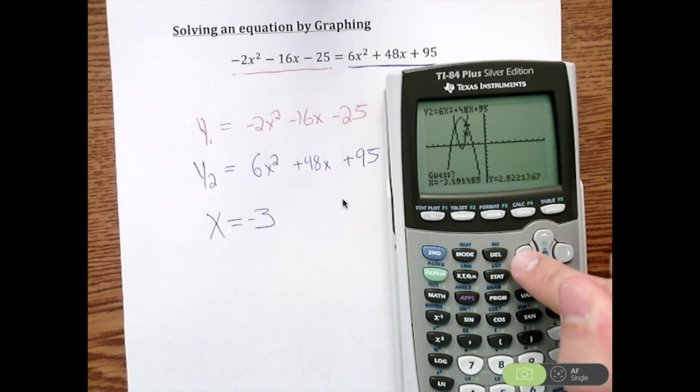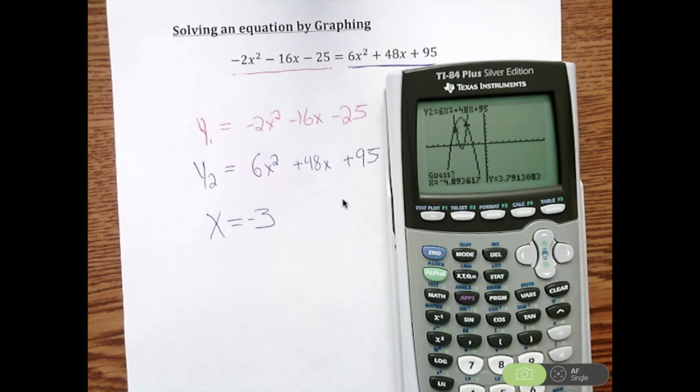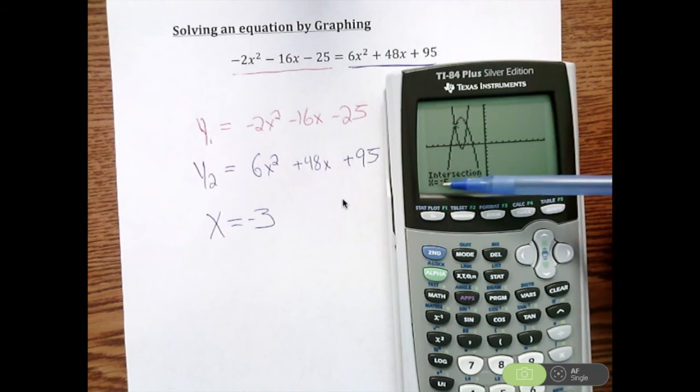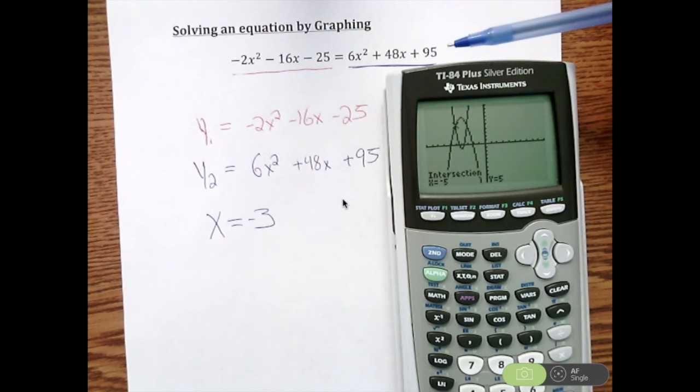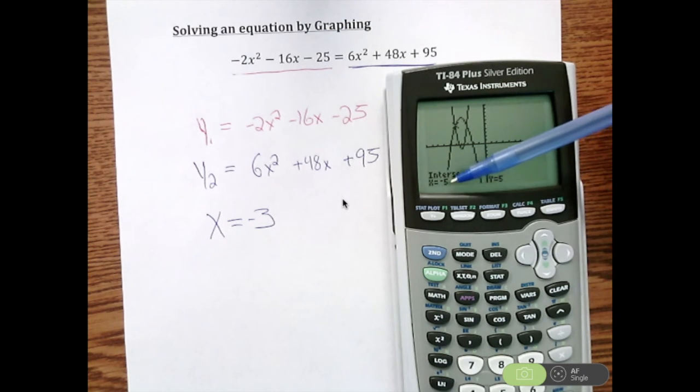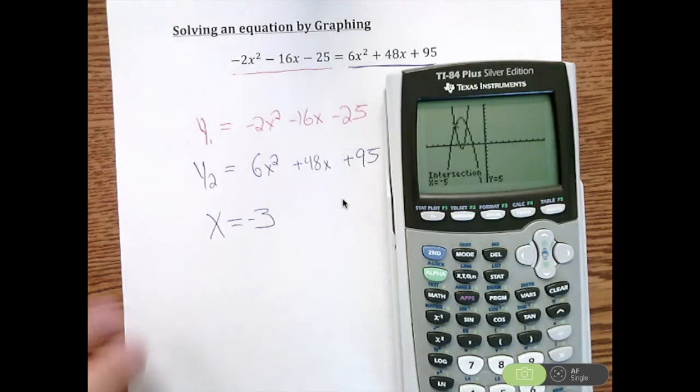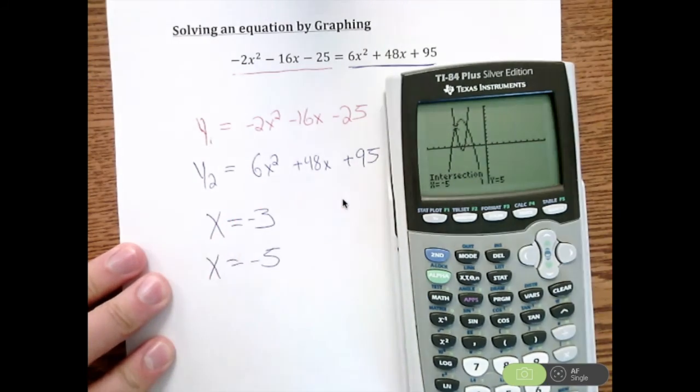So I'm going to have to hit the arrows to the left. And you'll see it moves over there. That's close enough. Hit Enter. And it says this intersection is at x equals negative 5, y equals 5. Again, there was only x values in the original problem. So all I care about is what is x. So x is negative 5.